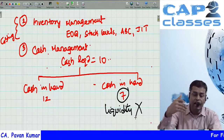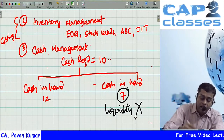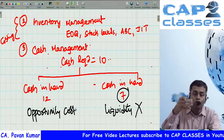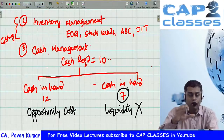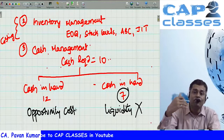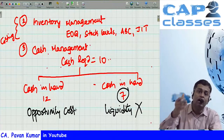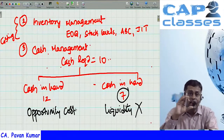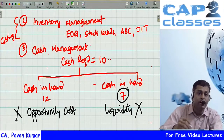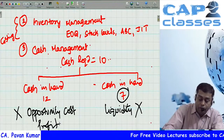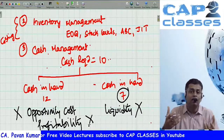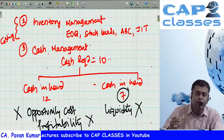If you need 10 rupees, holding 12 rupees creates idle cash with an opportunity cost, reducing profitability. Holding only 7 rupees causes a liquidity problem. Cash management is essentially about balancing profitability and liquidity — having more cash than needed is wrong, and having less is also wrong.